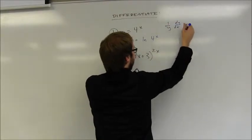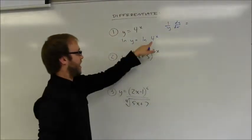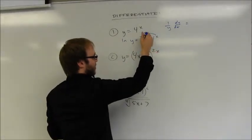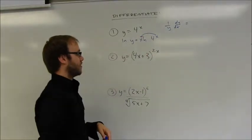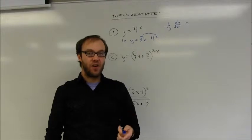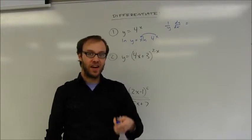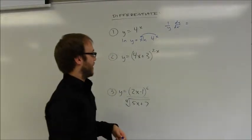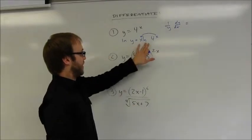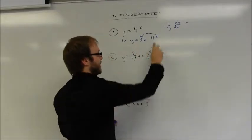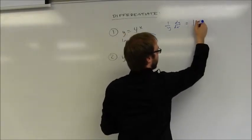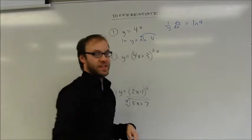And on this side, that natural log of 4 to the x is going to become x times the natural log of 4. Keep in mind that the natural log of 4 is a constant. So I'm going to end up getting a derivative here of it's just the natural log of 4 times x. Well that's just going to be the natural log of 4 when I take the derivative.